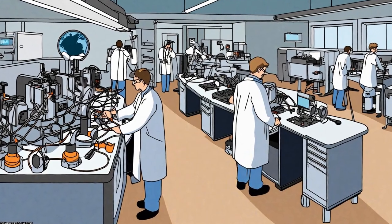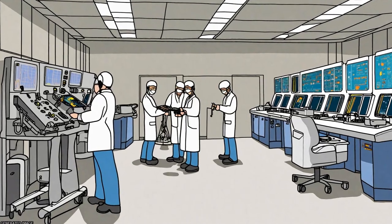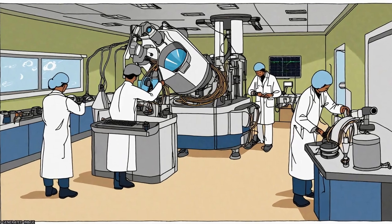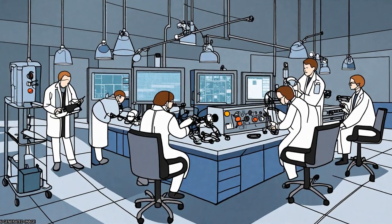Imaging spectroscopy, also known as hyperspectral remote sensing, is a technique used to characterize Earth's surface materials and processes through spectrally resolved measurements of light interacting with matter.